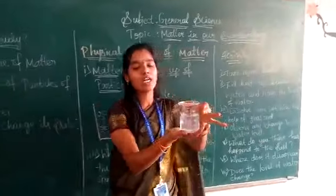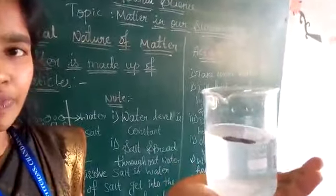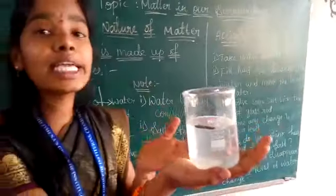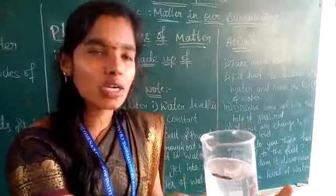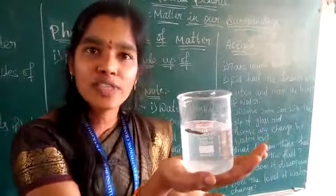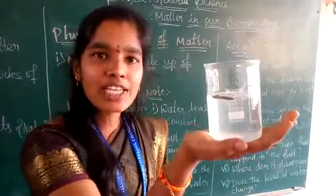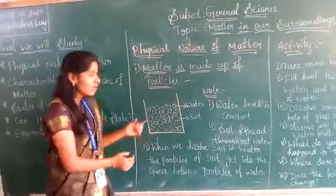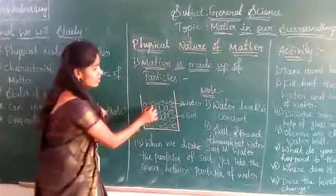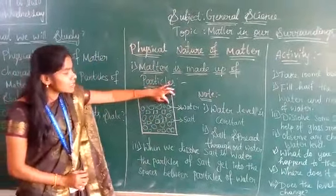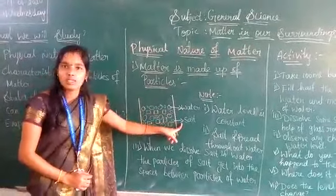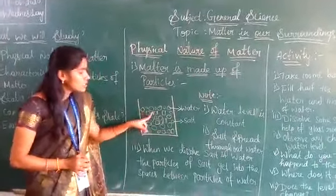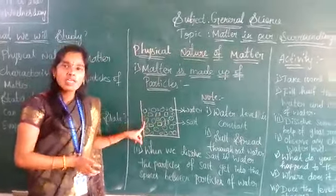Observe any change in the water level. What do you think has happened to the salt? After stirring, where did the salt disappear? Salt is not visible now. Does the level of water change? No. So what happened to the salt? Here I have drawn a diagram — this is the beaker. The circles represent water molecules, and this represents salt. Liquid particles are arranged loosely, so between the water molecules there is space, and the salt occupies that space.